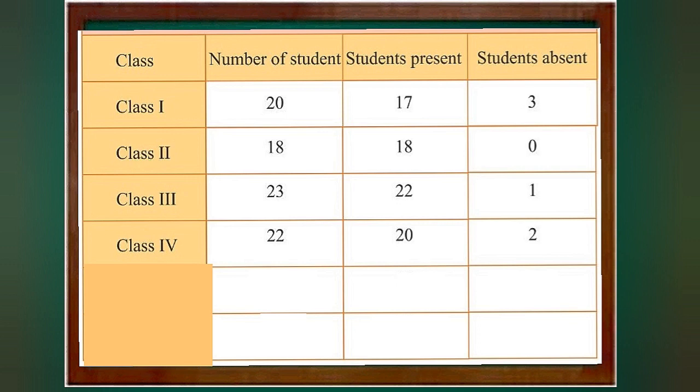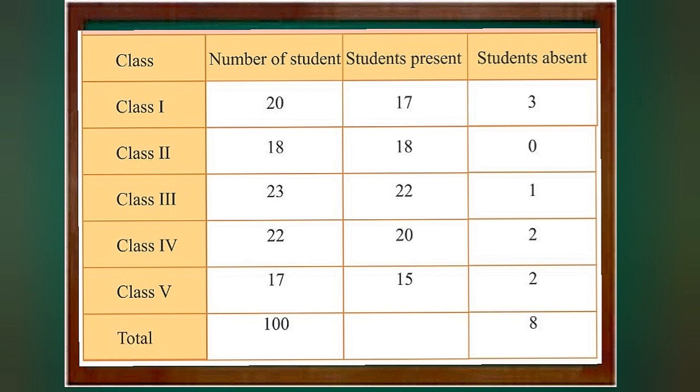The total number of students in class 5th is 17; there are 15 present students and 2 absent students. Thus, the total number of absent students across all classes is 8.